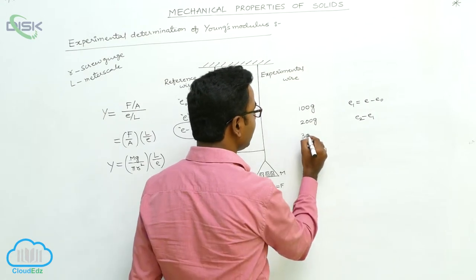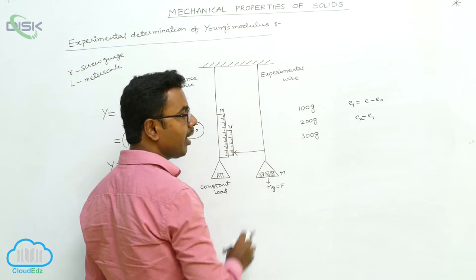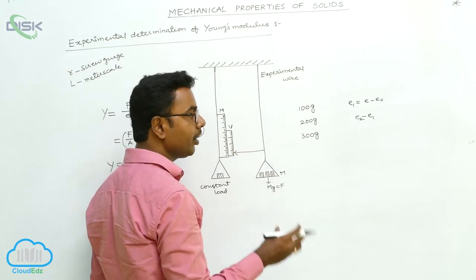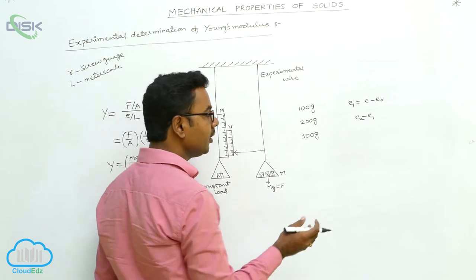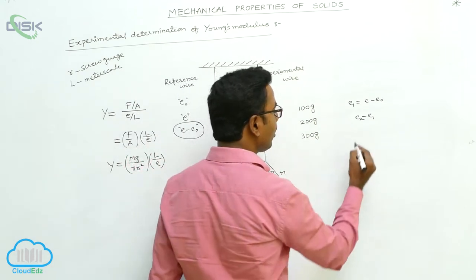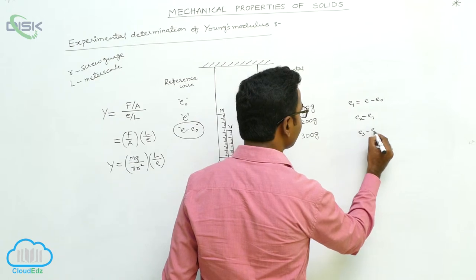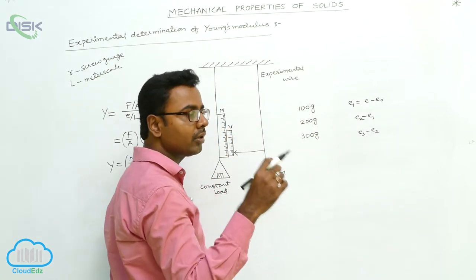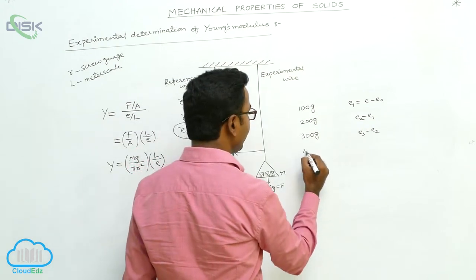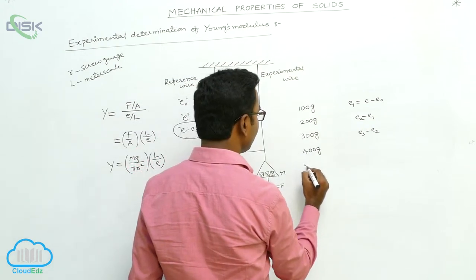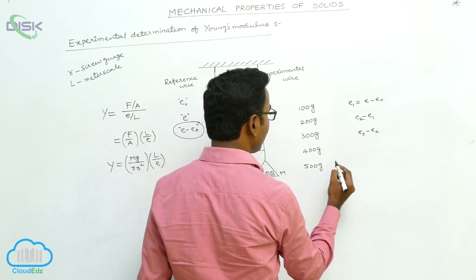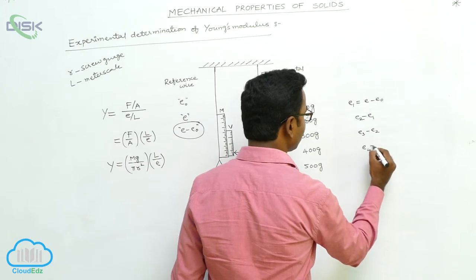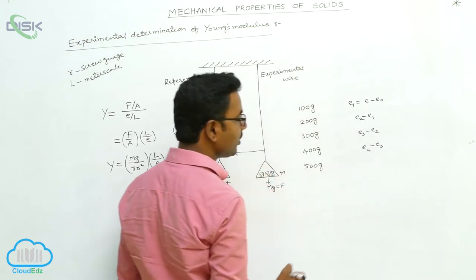Now adding more 100 grams, the total mass present in the pan is 300 grams. For 300 grams, the total elongation is E3. Only for the third 100 grams, the elongation is E3 minus E2. We may repeat this for 400 grams and 500 grams also. For 400 grams, the total reading is E4, and only for the fourth 100 grams the elongation is E4 minus E3.